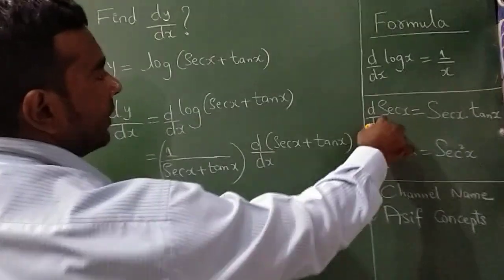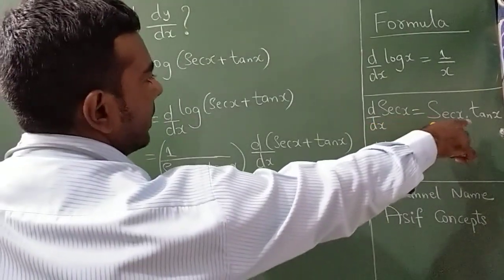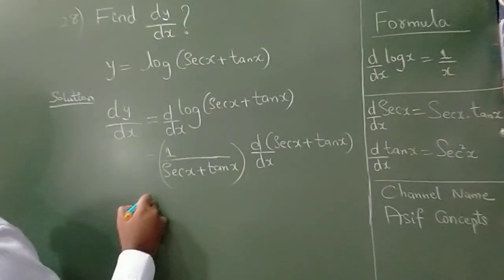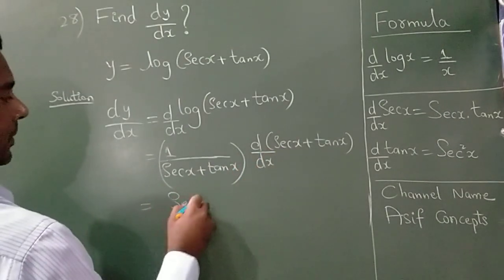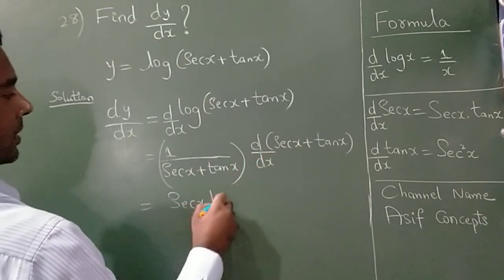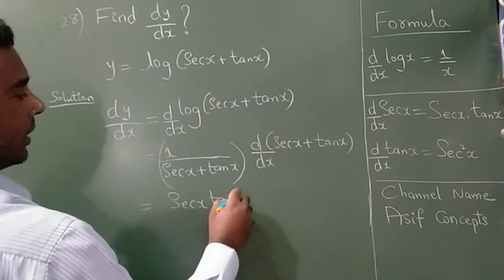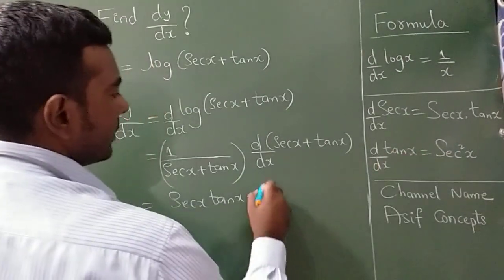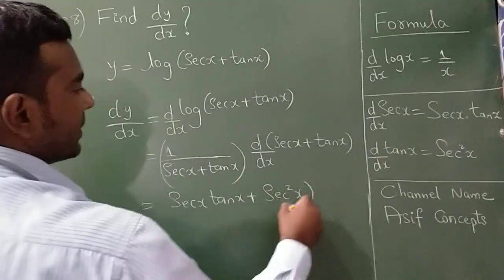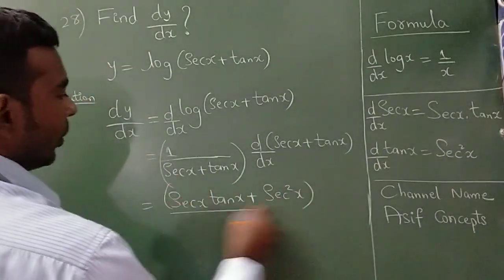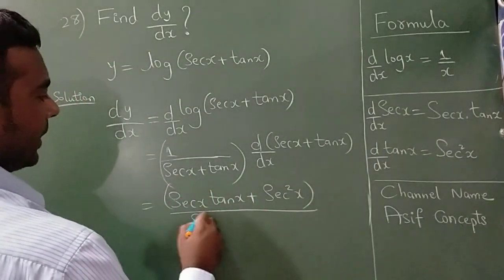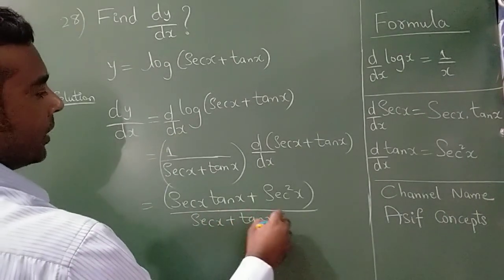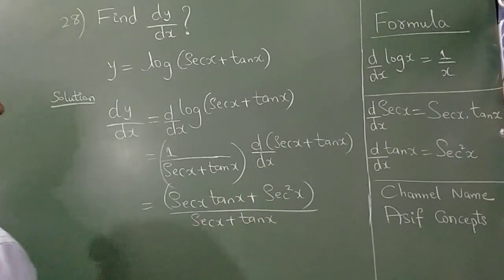Here, dy/dx of sec x is sec x into tan x. So this can be written as sec x into tan x plus dy/dx of tan x, which is sec squared x — whole divided by (sec x + tan x).